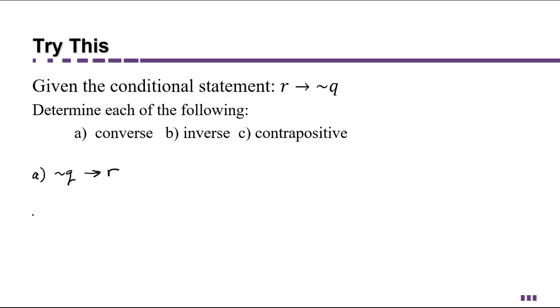For part B, we're doing the inverse, which changes only the sign. So this would mean that the R still stays on the antecedent side, and the Q still stays on the consequent side. But we're going to change this to not R implies, and the negation of negation is the original statement. So not R implies Q.